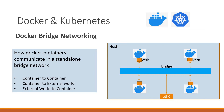In this video, we will see how Docker containers communicate in a standalone bridge network. We have a host in which the Docker engine is installed. When we install the Docker engine and it is up and running, by default a standalone bridge network will be created.